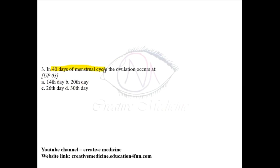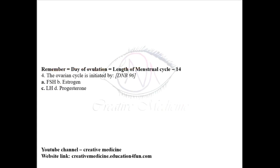In a 40-day menstrual cycle, ovulation occurs on the 26th day. The day of ovulation is equal to the length of the menstrual cycle minus 14. So, 40 minus 14 equals the 26th day.